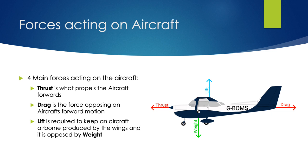There are four main forces that act on an aircraft during flight. The first is thrust, which propels an aircraft in a forward direction. Then we have the opposing force to thrust, which is drag, acting in the opposite direction. We also have lift, which is required to keep an aircraft airborne — produced mainly by the wings and aerofoils — and lift is opposed by weight. So we've got four main forces, and two of them each act perpendicular to one another.